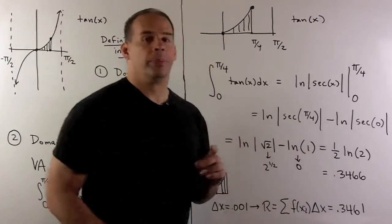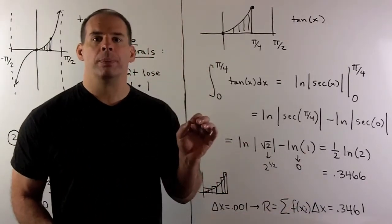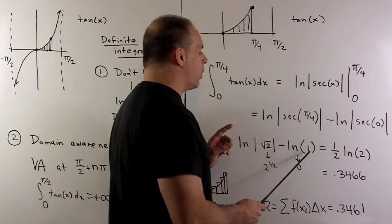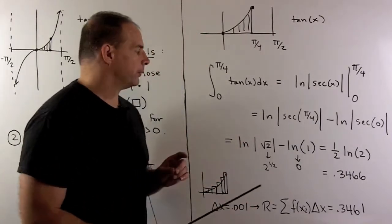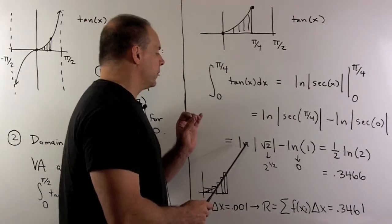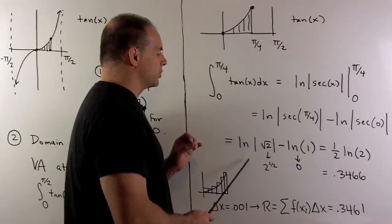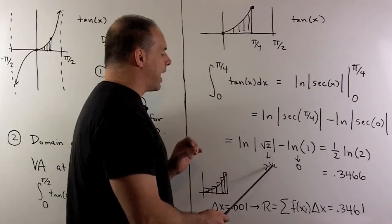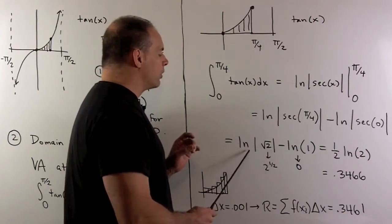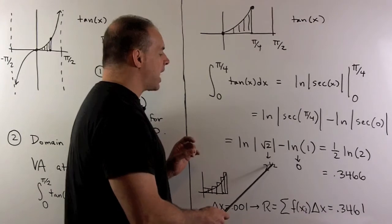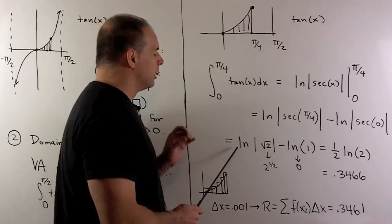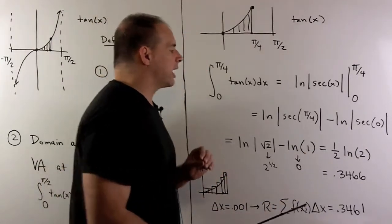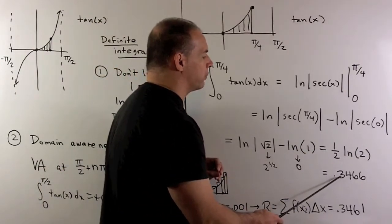For secant of zero, that's one over cosine of zero. Cosine of zero is one, so we get one here. But the natural log of one is equal to zero, so that goes away. Now, with the natural log of square root of two, we can drop the absolute value sign since it's positive. We can rewrite that as two to the one-half. Then we have the logarithm rule: if I have an exponent on the inside, I can bring it out in front as a constant. So we wind up with one half natural log of two.